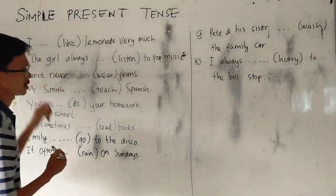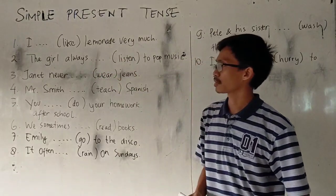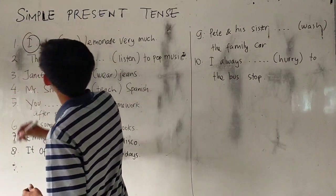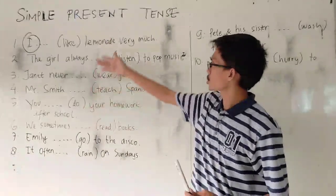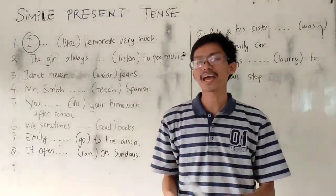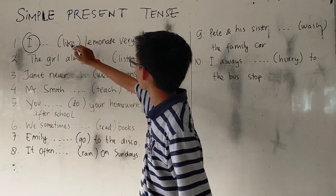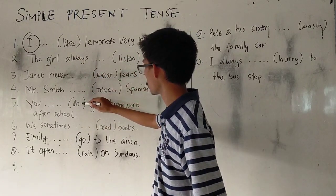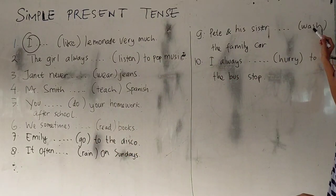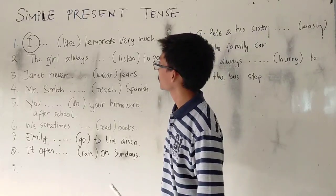Number 1: I like Latin very much. Remember, you have to look at the subject first. You just need to decide whether to add S or ES, or not add S or ES, to the verbs. These are the verbs: like, listen, wear, teach, break, go, rain, wash, hurry. Those are verbs.